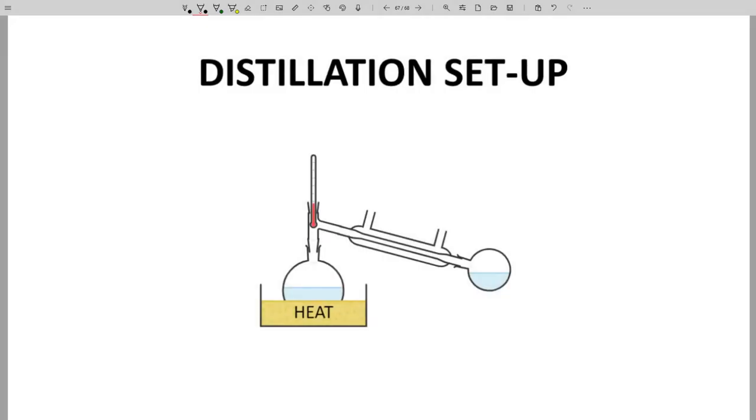A distillation setup generally looks something like this. We heat a flask with the impure material. Eventually, the contents boil and vapors rise. They find their way into the condenser where the glass is cooled through water flow. So water comes in the bottom, out the top, through tubing. The gas condenses and then drips into a receiver flask.